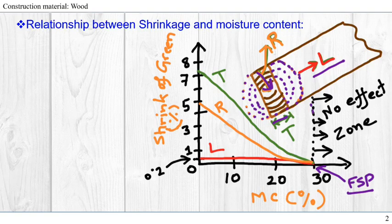Above the FSP, the moisture content does not affect the dimension of the wood. Now let's look at the general formula for wood shrinkage or swelling.